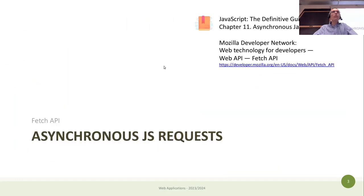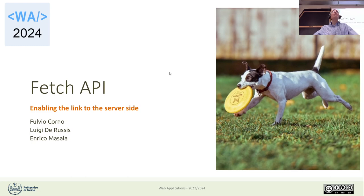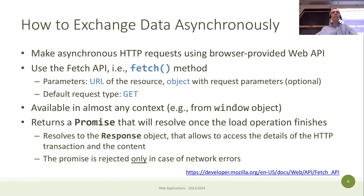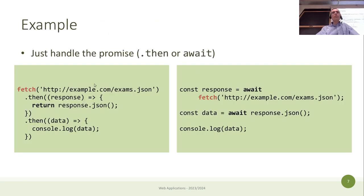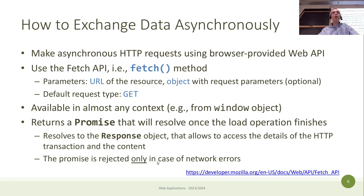We were talking about the Fetch API — a function inside the browser environment that allows us to load any URL you like. You just specify it as a string, then use the response, which comes as the value of a fulfilled promise. The promise is rejected only in case of a network error, meaning fetch cannot connect at all.